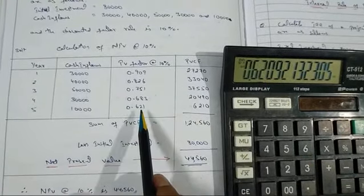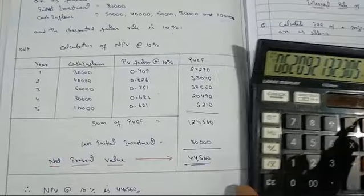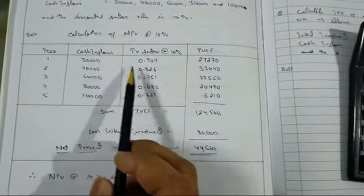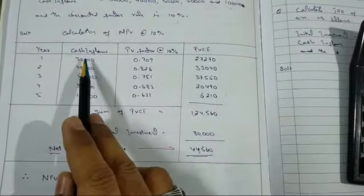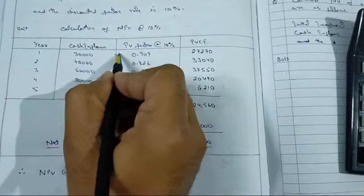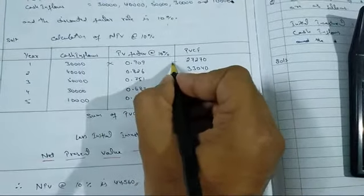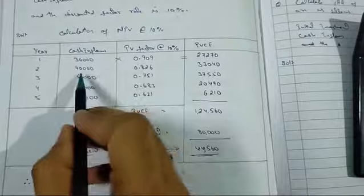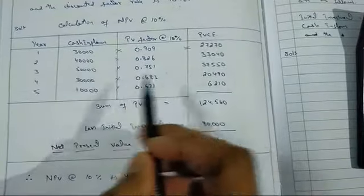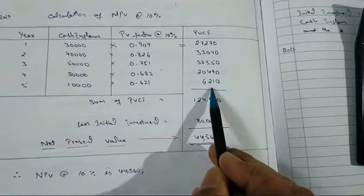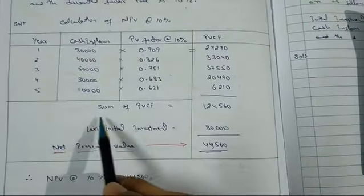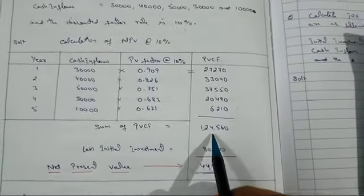In the NPV method, which is a discounted cash flow method, we multiply each year's cash inflow by its corresponding PV factor. We do this for all five years. The resulting present values are then summed to get the total present value of cash inflows.